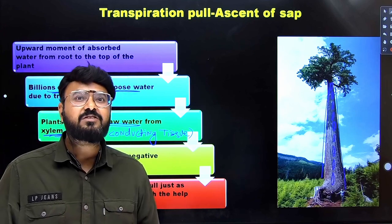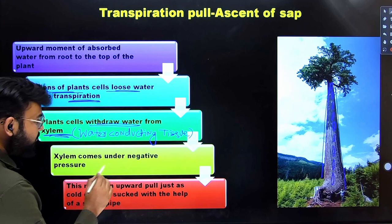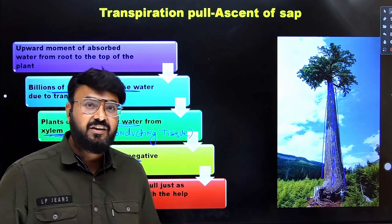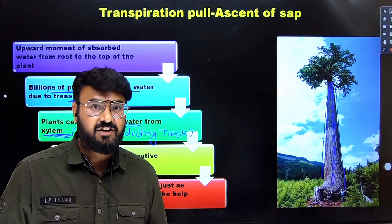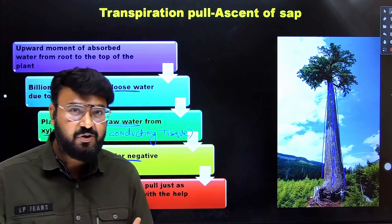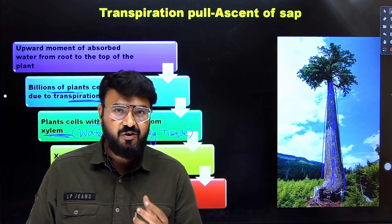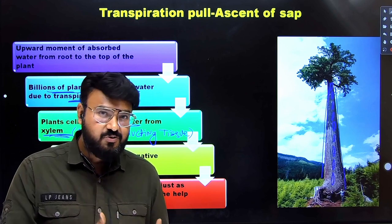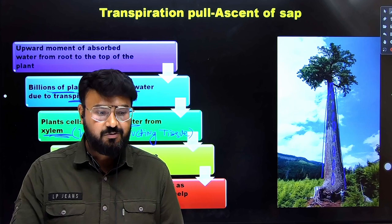Then the xylem comes under a tension. A negative pressure develops in the xylem. And due to this negative pressure, it creates a suction, suction like something when you drink a cold drink from the straw or the fruit juice, you create a suction, it creates the pull and the juice or the cold drink comes upward through the straw.